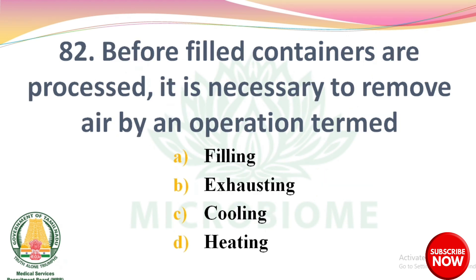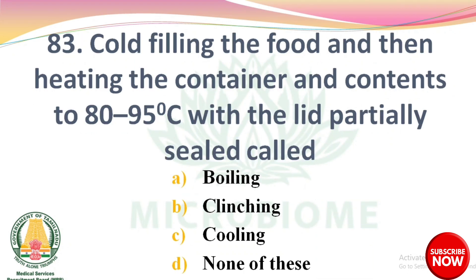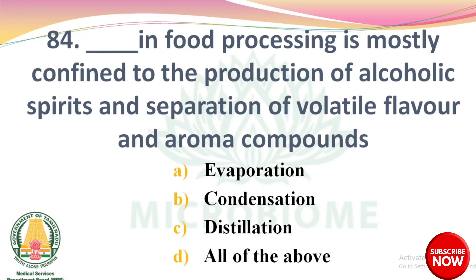Next question: before filled containers are processed, it is necessary to remove the air by an operation termed as options: filling, exhausting, cooling, heating. The right answer is Option B: exhausting. Cold filling the food and then heating the container and contents to 80–95 degrees Celsius with the lid partially sealed is called options: boiling, clinching, cooling, none of these. The right answer is Option B: clinching.